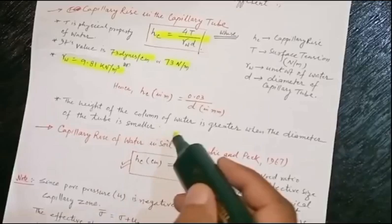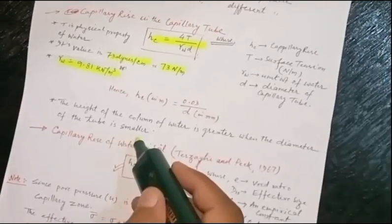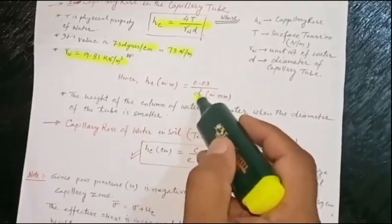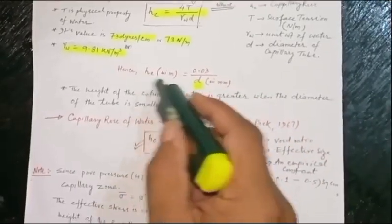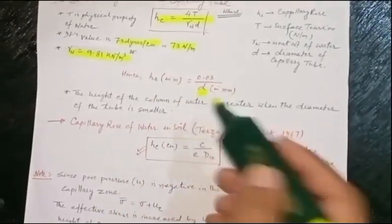The height of the water column is greater when the diameter of the tube is smaller. Since d is inversely proportional, height increases as d decreases.